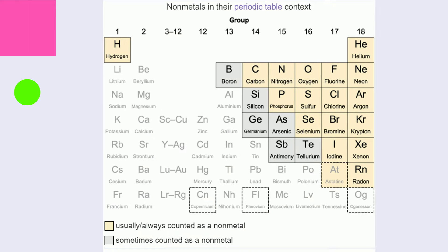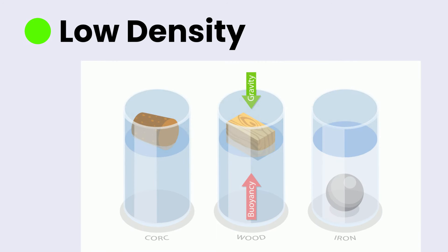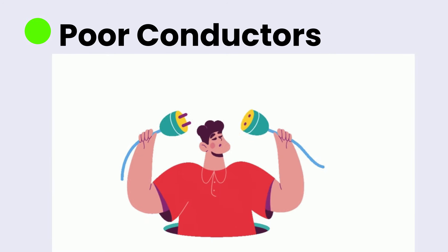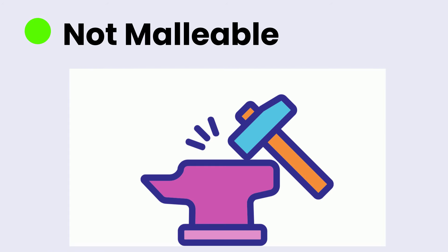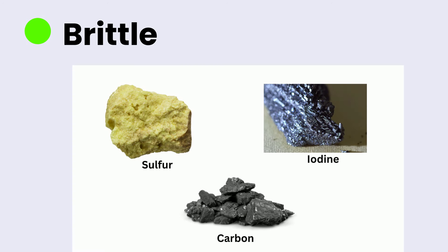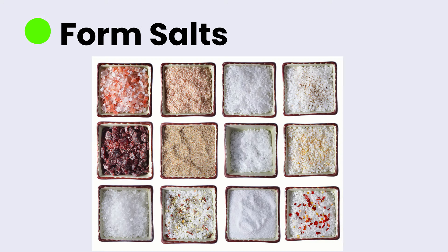Non-metals are found on the right side of the periodic table and they tend to gain electrons. Let's take a look at some properties of non-metals. They have low density, are poor conductors of heat and electricity, are not malleable or ductile, they are brittle solids or gases at room temperature, and they react with metals to form salts.